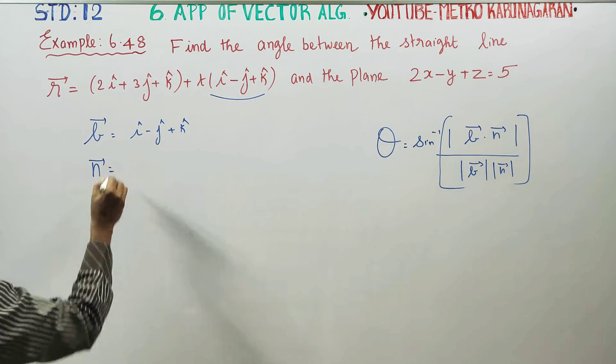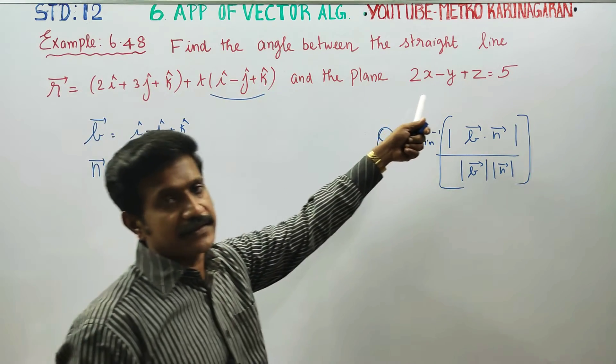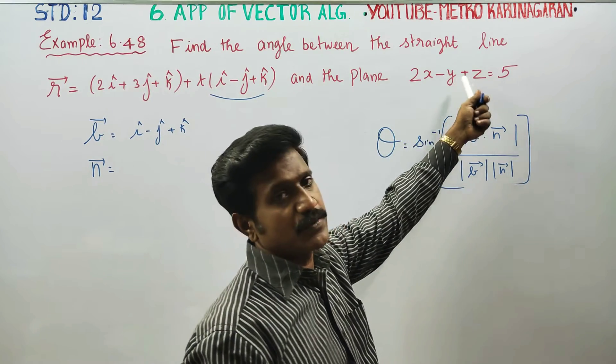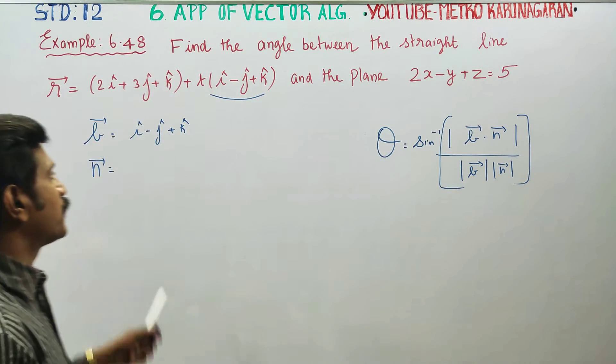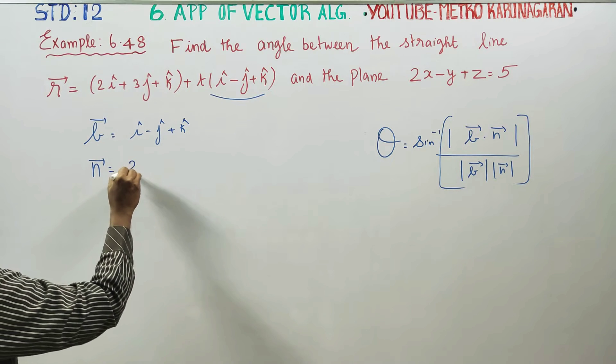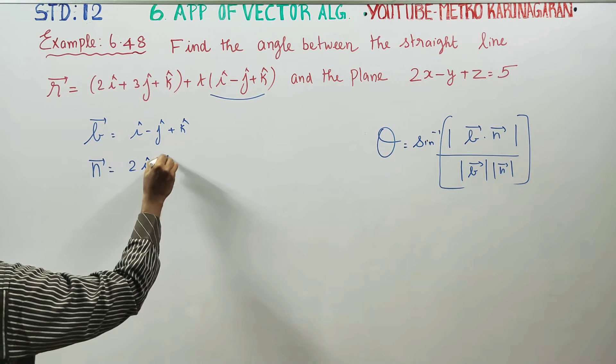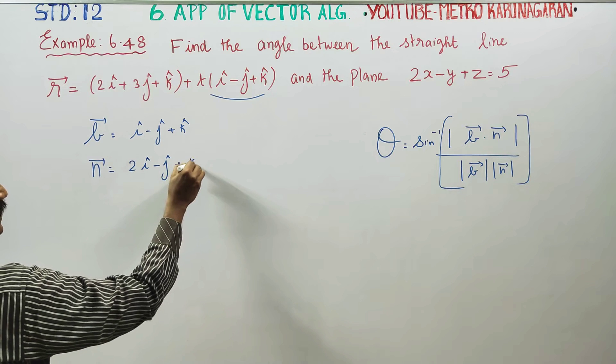Normal vector n vector is perpendicular to the plane. The x coefficient, y coefficient, z coefficient form the normal: 2i vector minus j vector plus k vector.